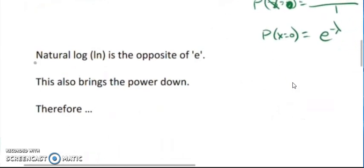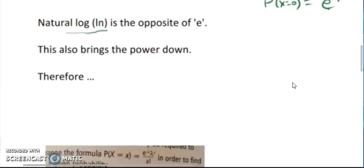So if you have a look at the next little note I've got here, the natural log (ln) is the opposite of e. And it also brings the power down. So it brings this power here down. Natural log under that. Remember in algebra, if we do something to one side of the equals, we must do it to the other side of the equals.